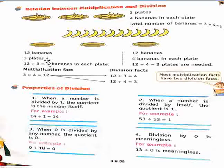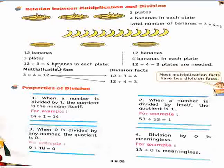So 12 bananas in total. How many bananas put in one plate? 4. So 12 divided by 3 equals 4.